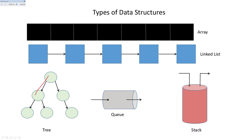In nonlinear data structures, one element is connected to n number of elements — for example, one element connected to two elements. In this video, nonlinear data structures include arrays, linked list, queue, and stack as well. For linear data structures, one element is connected to another element without any interruption.